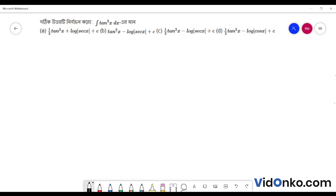Option a is tan squared x minus log of sin x plus c. Option b is tan squared x minus log sin x plus c.